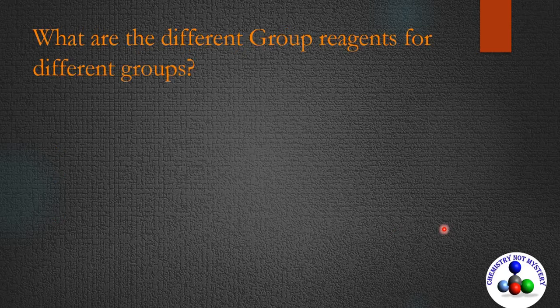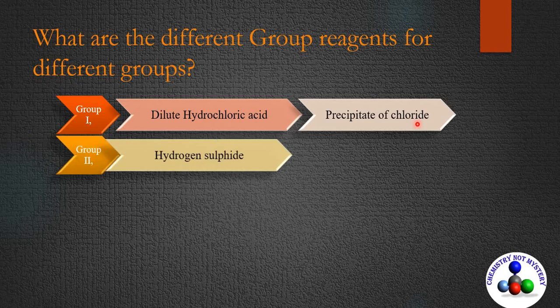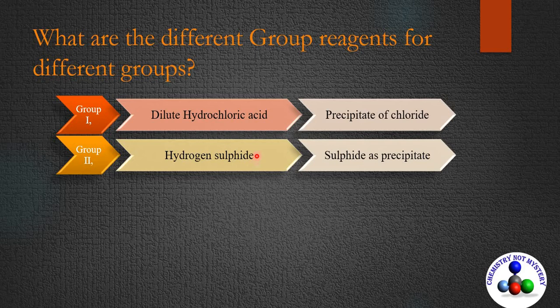So what are the different group reagents? Dilute hydrochloric acid is the group reagent for the first group. Cations of this group form chloride precipitates with dilute hydrochloric acid. The solubility products of chlorides of lead, mercury, and silver are the lowest, so they are precipitated first.